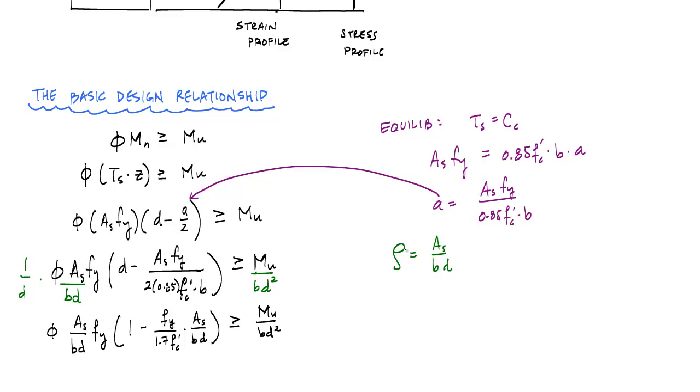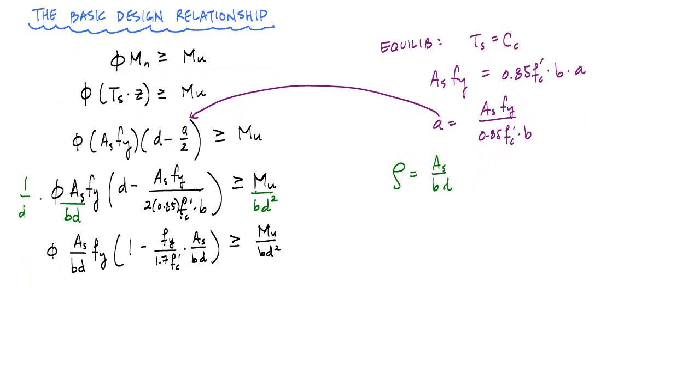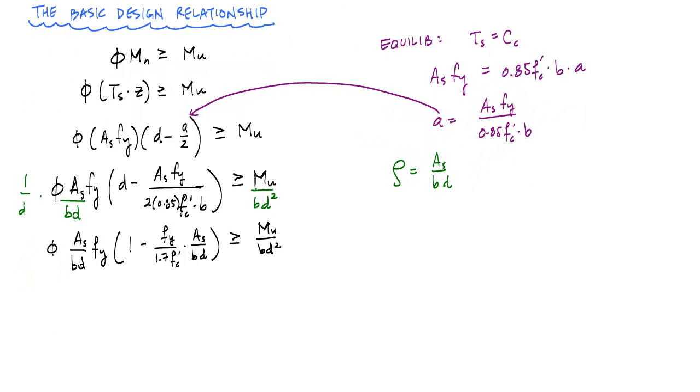And then now if I make this substitution for rho, I get this very popular equation right here. If I substitute for rho equal to AS over BD, I'm going to get phi times the reinforcement ratio FY times 1 minus FY over 1.7 FC prime times rho greater than or equal to MU over BD squared. And this relationship here is the basic design relationship but manipulated to include the reinforcement ratio and assuming that the steel has yielded.